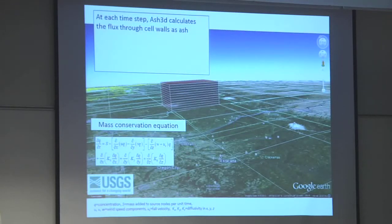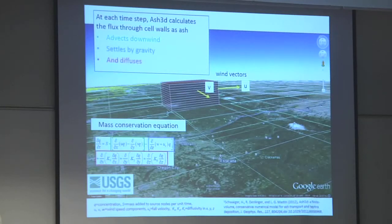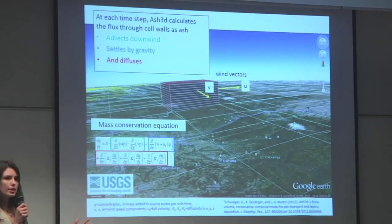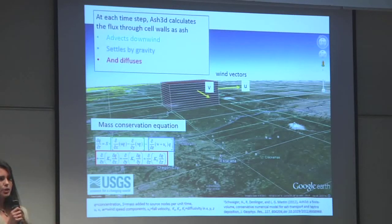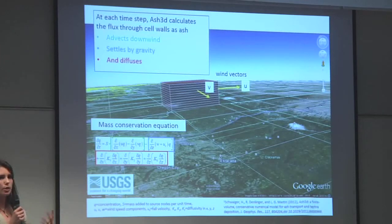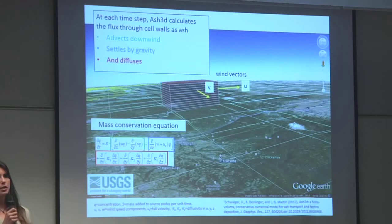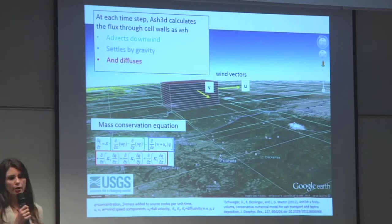ASH3D calculates the flux of volcanic particles through the cell walls. The ash is advected downwind primarily by the wind, settles gravitationally, and a diffusion coefficient acts as a fudge factor to account for the complex turbulent dynamics of the plume that allow it to spread out as it travels along.